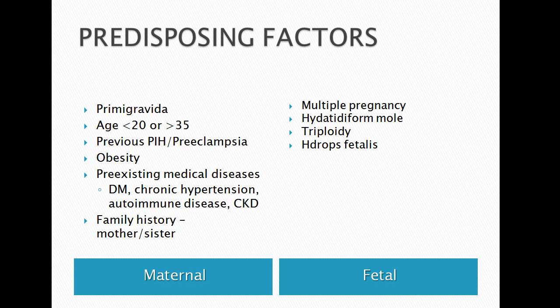Other maternal risk factors include obesity, preexisting medical illnesses such as diabetes, chronic hypertension, autoimmune conditions, and chronic kidney disease, as well as a family history — such as mother or sister — of hypertension in pregnancy.